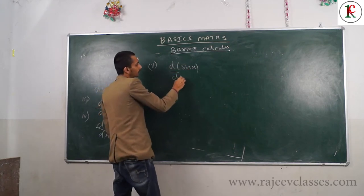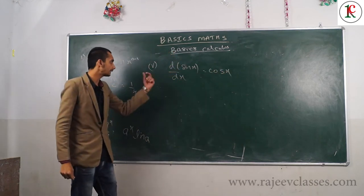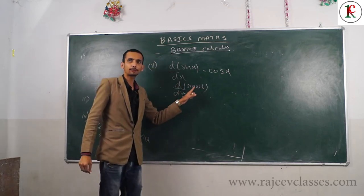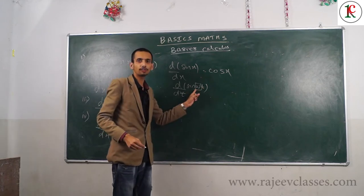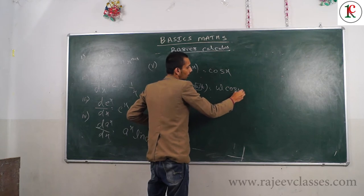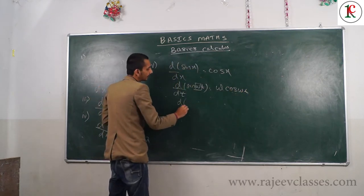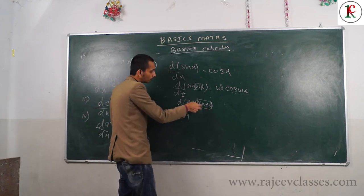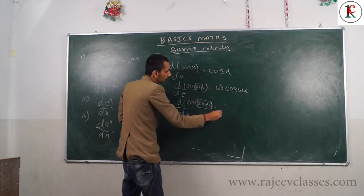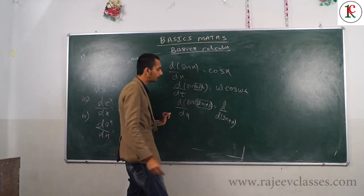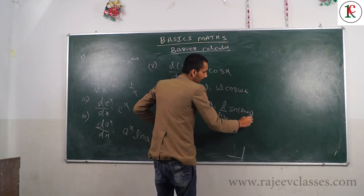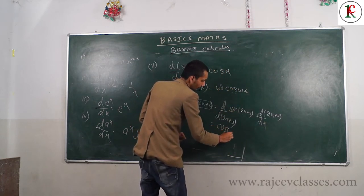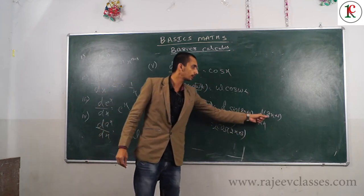For trigonometric functions: differentiation of sin X is cos X. Similarly, differentiation of sin(omega t) with respect to t equals omega cos(omega t) - omega is a constant coefficient. For example, differentiation of sin(2x + 3) equals cos(2x + 3) times differentiation of (2x + 3), which gives us cos(2x + 3) times 2.